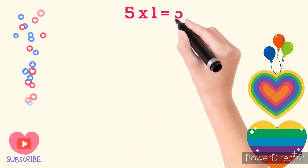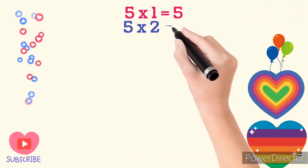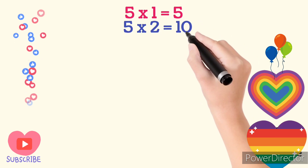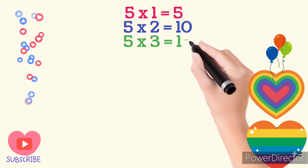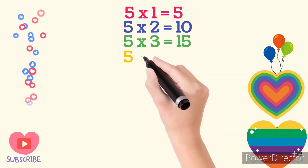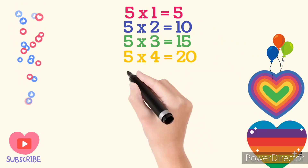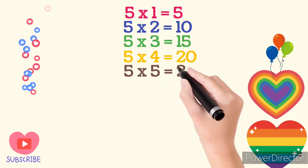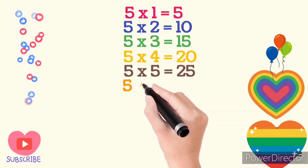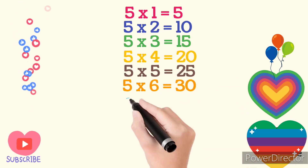5 times 1 are 5. 5 times 2 are 10. 5 times 3 are 15. 5 times 4 are 20. 5 times 5 are 25. 5 times 6 are 30.